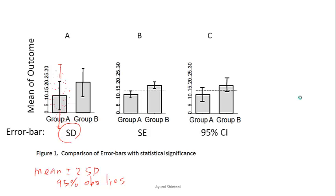You compute standard deviation based on your sample and you know how many n patients you have. Let's say n is 30 and standard deviation is 10; you can compute SE as 10 divided by the square root of 30. That's why standard error is much smaller than standard deviation, especially when n is large. By the way, sample size doesn't directly affect standard deviation, because standard deviation is just an average — and an average doesn't change by increasing n. So standard deviation is stable over sample size, but standard error becomes smaller as sample size becomes larger. SE estimates the accuracy of the mean.